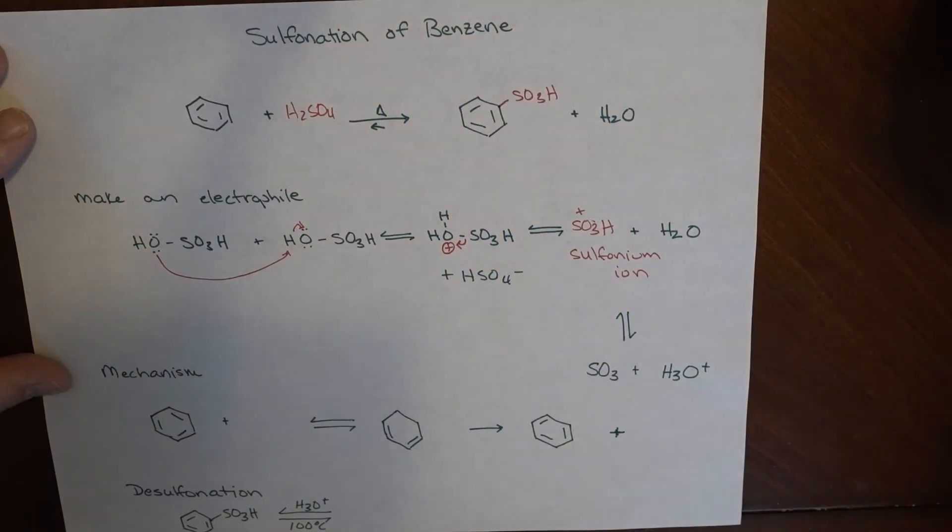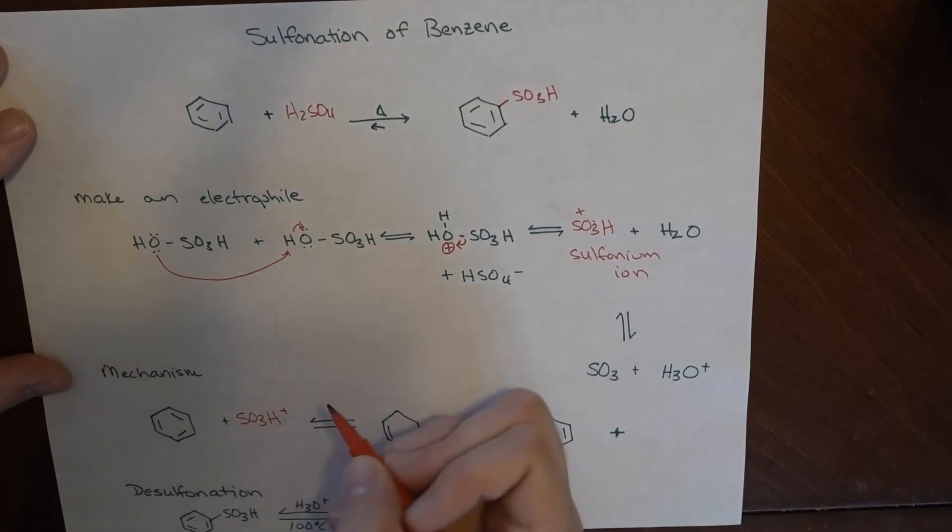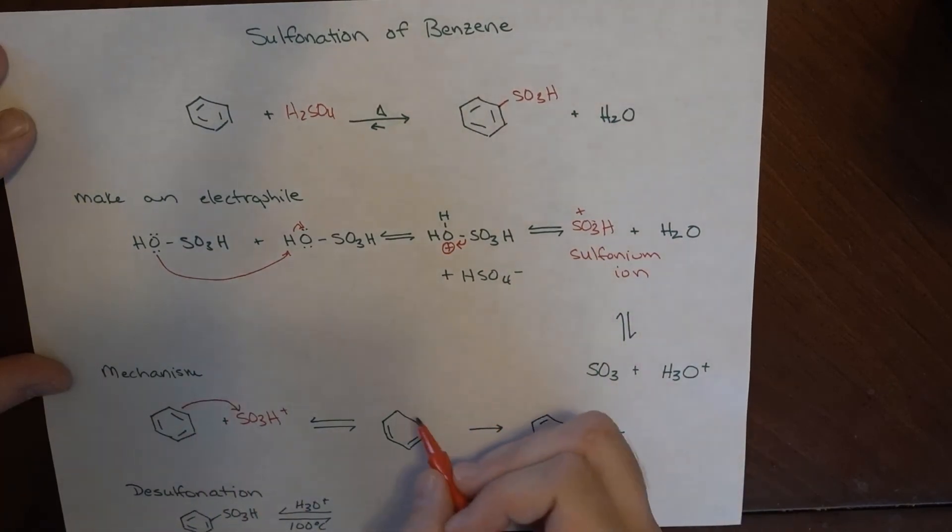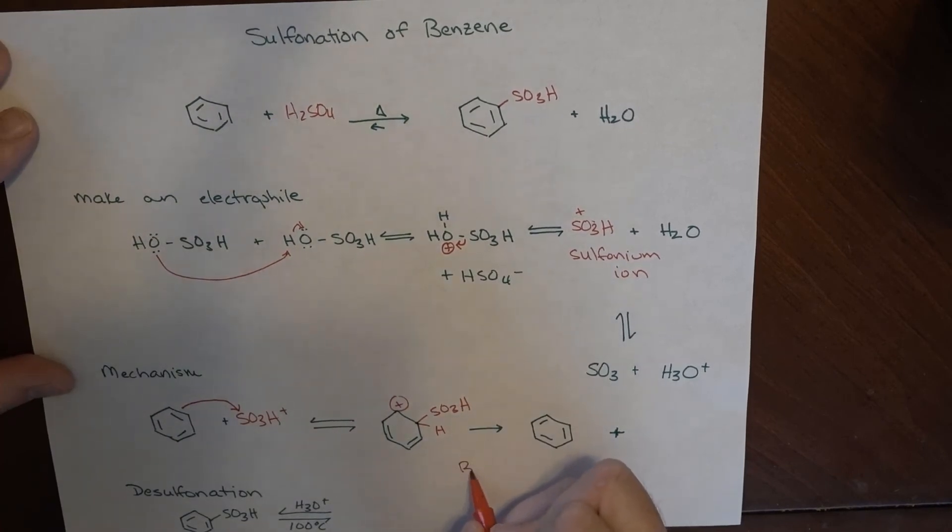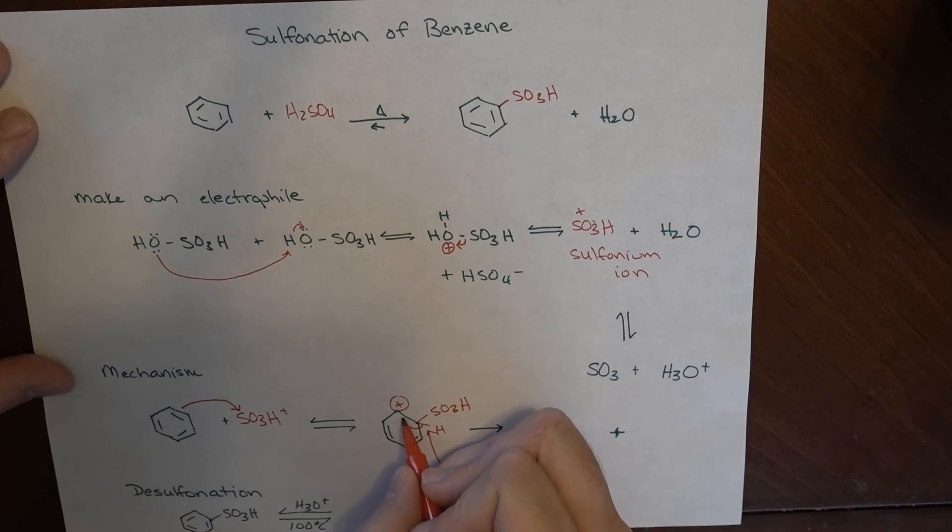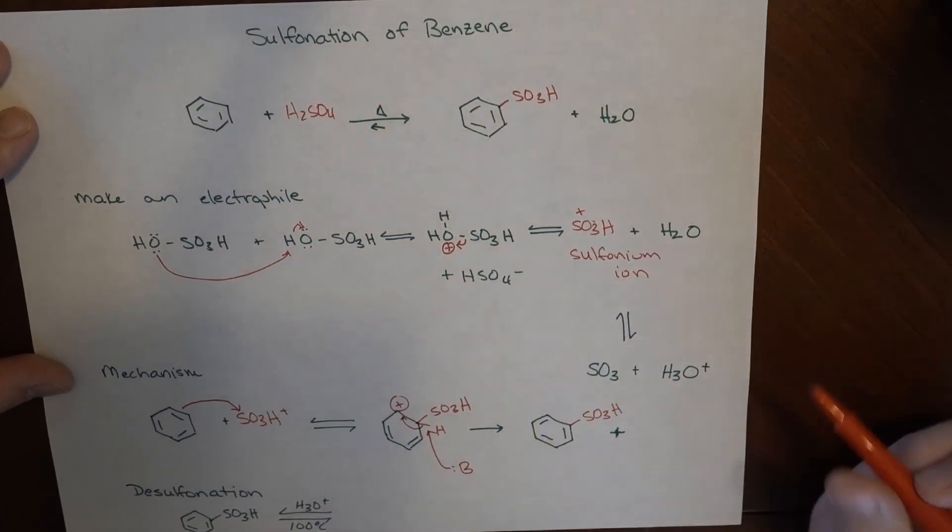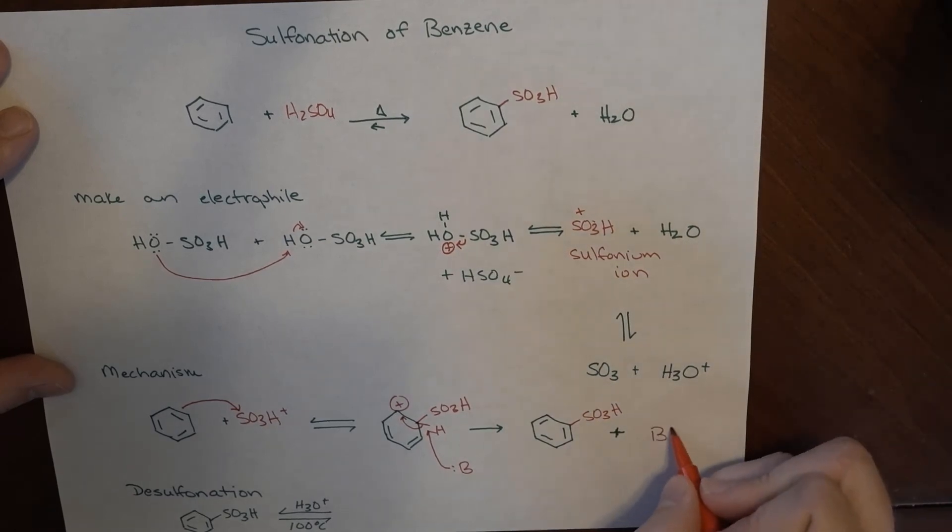It's a great electrophile, so that's what joins us down here in our mechanism. SO3H is what joins us. Electrons from here grab onto this, and what we have now is SO3H and an H here and a positive charge here. Some base comes along, grabs this hydrogen, kicks its electrons back up to here, and what we have is our SO3H and BH+.